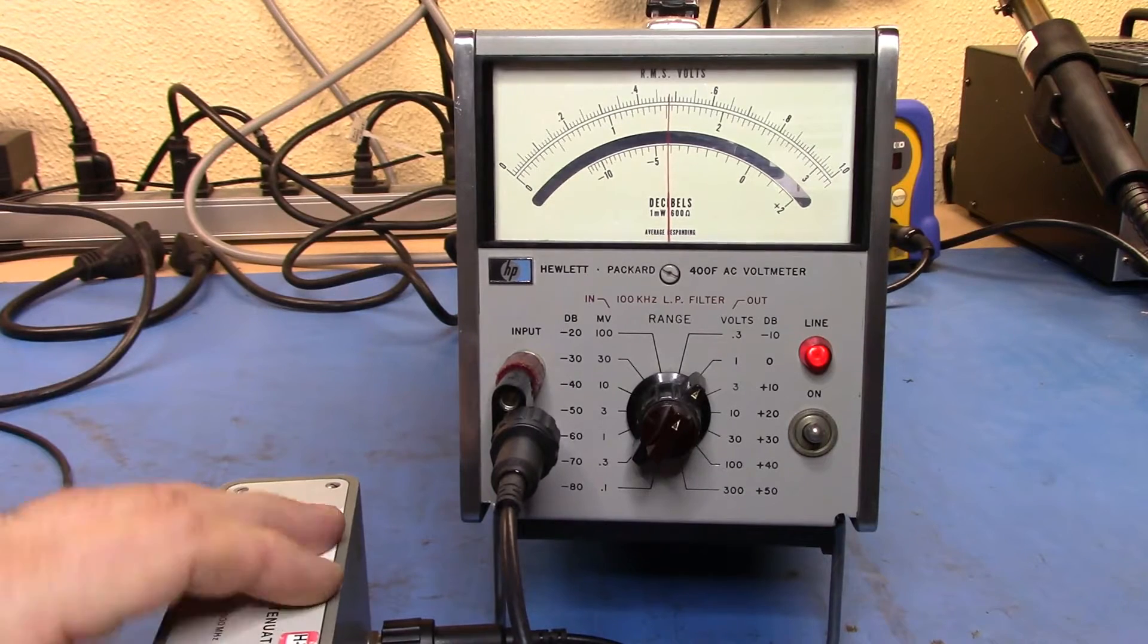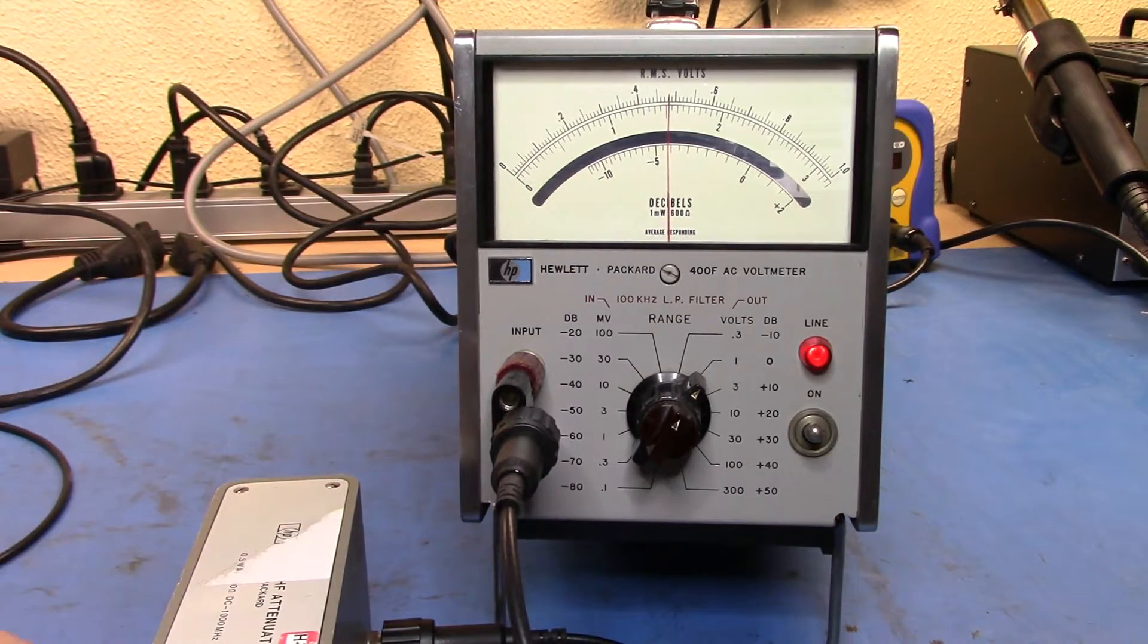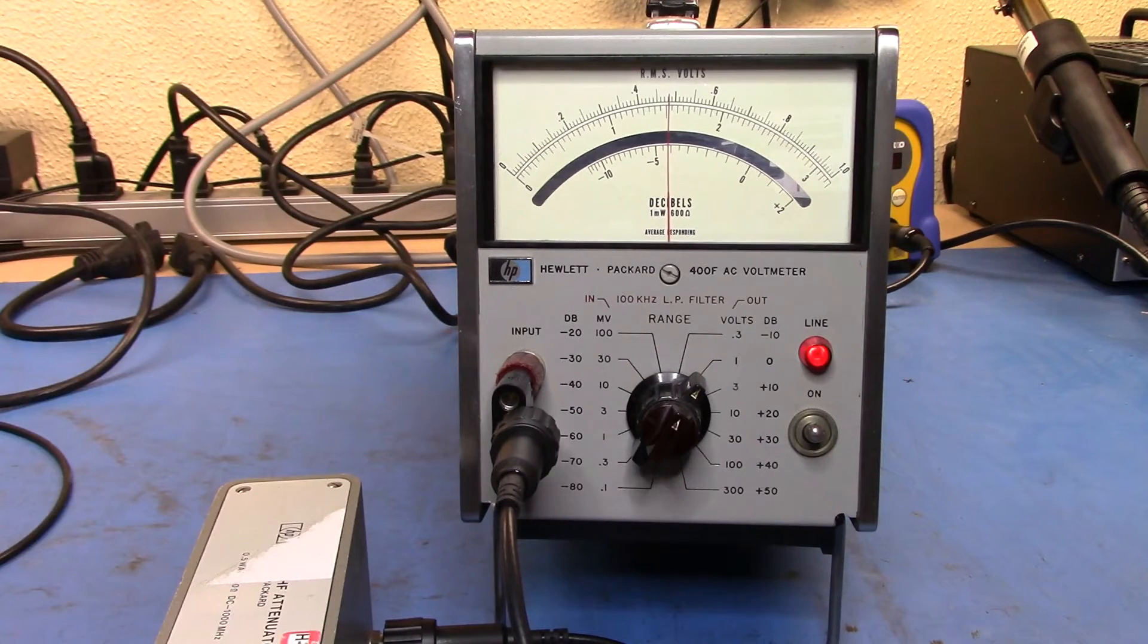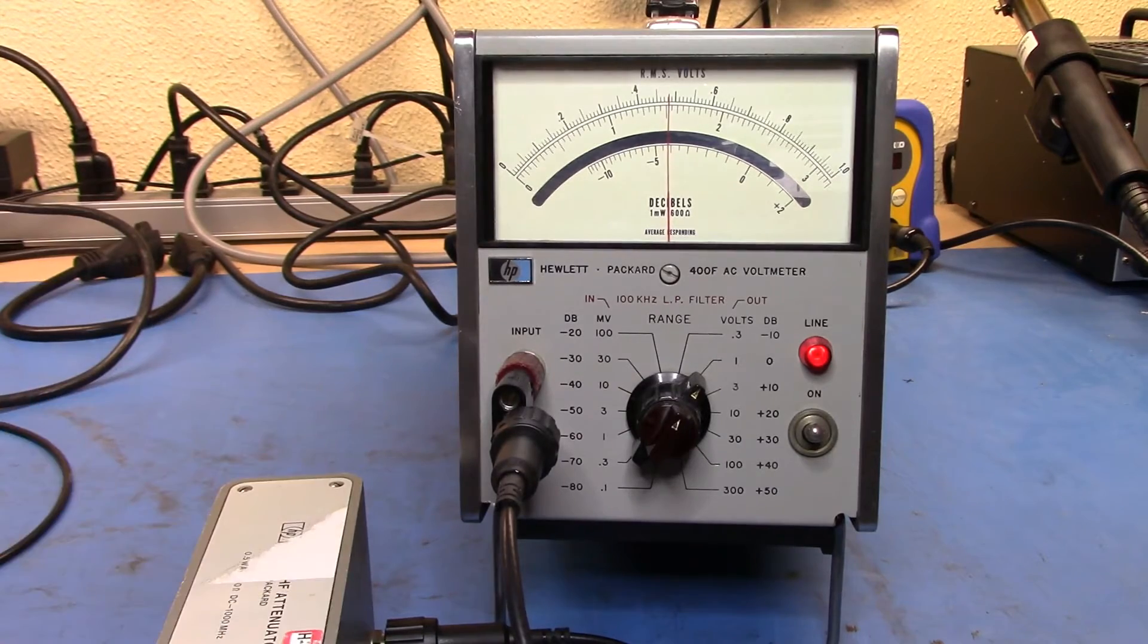They come in various formats. You can get later ones that have N-type connectors and SMA connectors and go up to like 50 gigahertz and so on. I only have the step attenuators that are manual and go to 1 gigahertz. So let's take a look inside one.